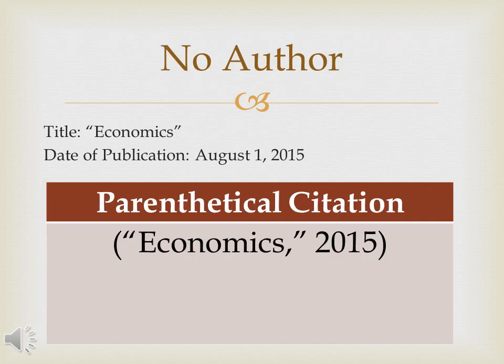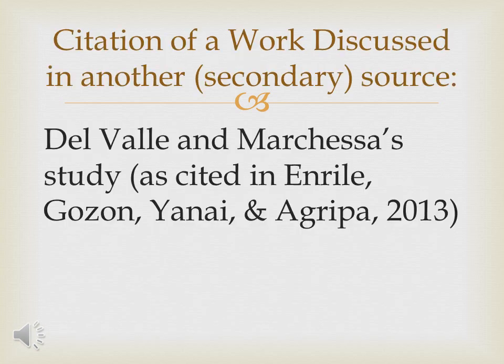But what if there is no author mentioned? In that case, the focus is the title. For example, the title is 'Economics,' date of publication August 1, 2015. When there is no author, we cannot use narrative citation. We only use parenthetical citation: open and close parenthesis, the title 'Economics' in quotation marks, comma, then the date of publication. Don't forget to include the quotation marks around the title.